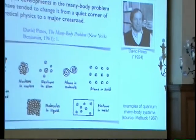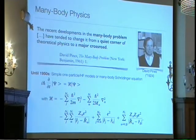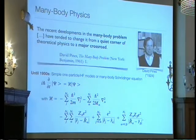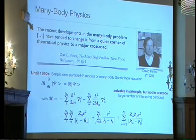What are many-body systems? For instance, the nucleons in a nucleus, molecules in a liquid, electrons in a metal, or the atoms in a molecule. Until the 1950s, you had simple one-particle, mean-field, or Hartree-Fock models. You could also attempt to start from first principles, namely the many-body Schrödinger equation. This is solvable in principle but not in practice — due to large numbers of interacting particles with long-range Coulomb interactions, you will not succeed with 100 particles.